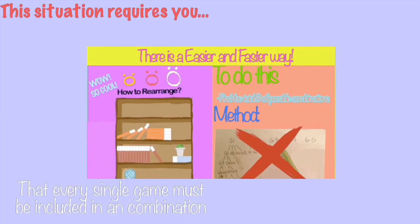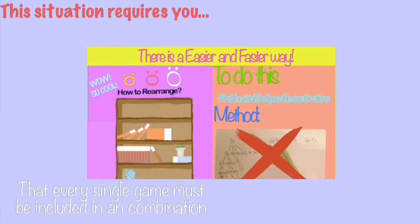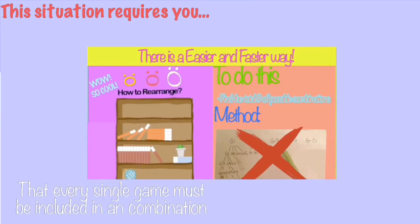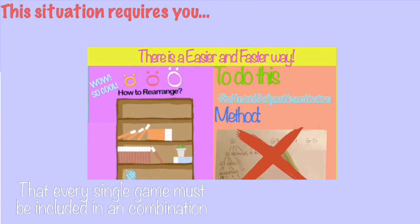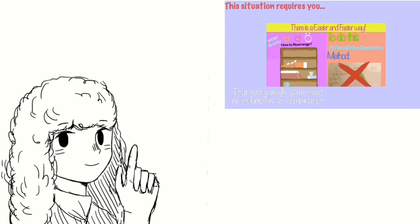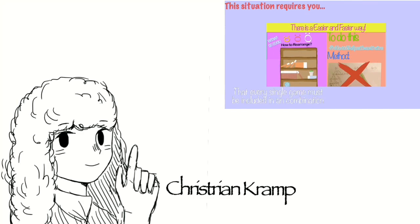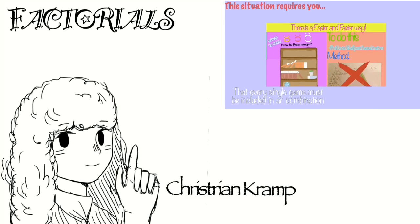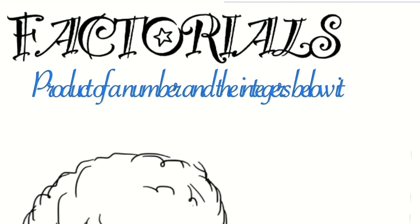Since this situation requires an arrangement that must include all the games, you must find a way to reduce the number of choices each time. Fortunately, a French mathematician named Christian Kramp discovered how to do that by using factorials.